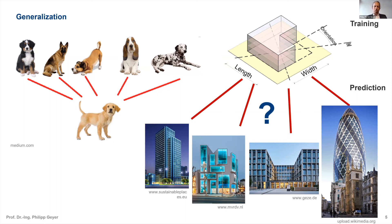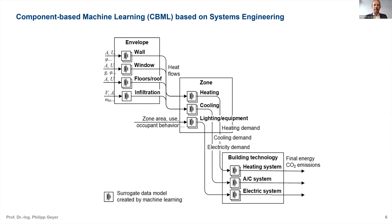To achieve this, we need to integrate structures and knowledge from both computer science and engineering. Our approach for that integration is selecting an appropriate structure for decomposing the data model — we align the data model to typical systems engineering structures in energy engineering of buildings. You see here the envelope as one piece of the component structure, the zone, and the building technology with sub-components: wall, windows, doors, roof, and so on, connected by parameters.